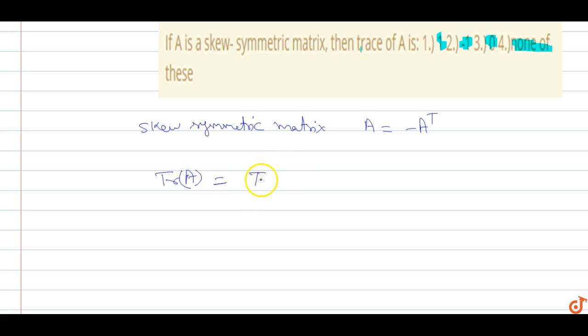Trace of minus A transpose, or we can say minus of trace of A transpose. So we can see that this is also equal to zero, because in a skew-symmetric matrix, the trace is the sum of...